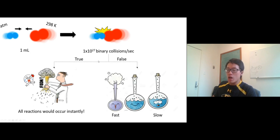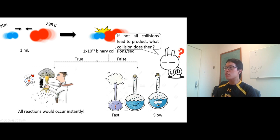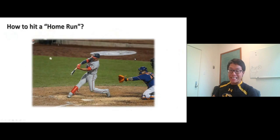Actually, it's not really true. In reality, some reactions go quick, some go slow, some in the middle. So not all collisions lead to reactions. Now the next question is: if not all collisions lead to the product, what collisions do? I'll give you an analogy. Have you played baseball or at least watched baseball?